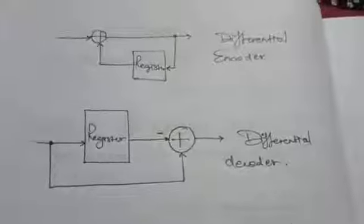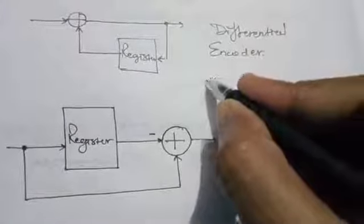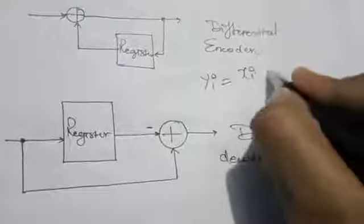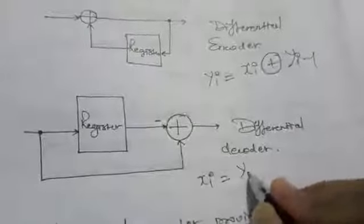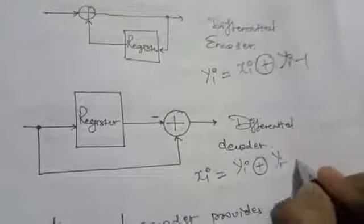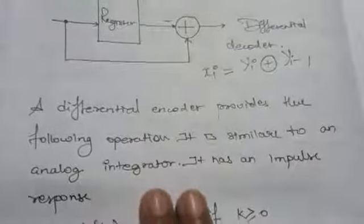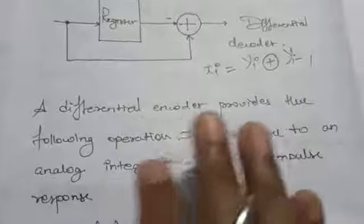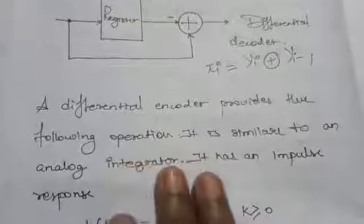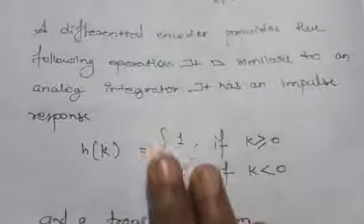First we have the differential encoder. Whatever value you consider — for example yi — we compute xi plus yi-1 here. The differential encoder provides a binary modulation operation (addition). It is similar to an analog integrator, where we integrate all analog signals (performing addition). It has an impulse response and a transfer function.